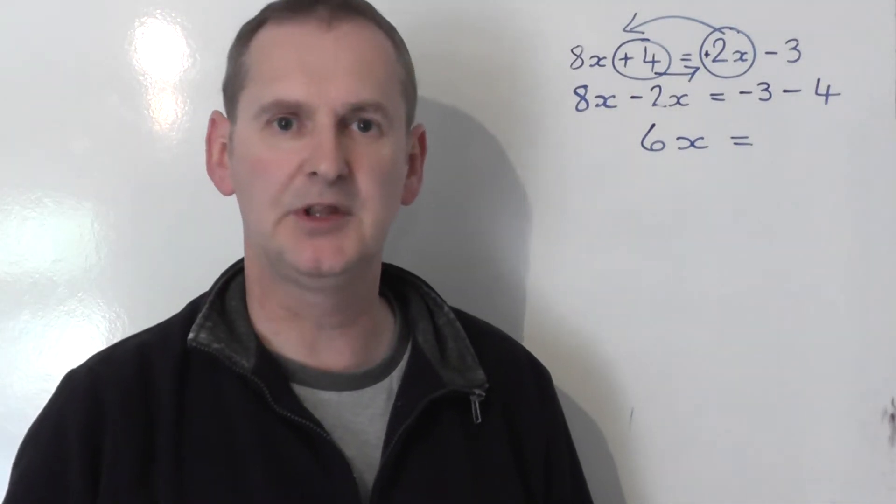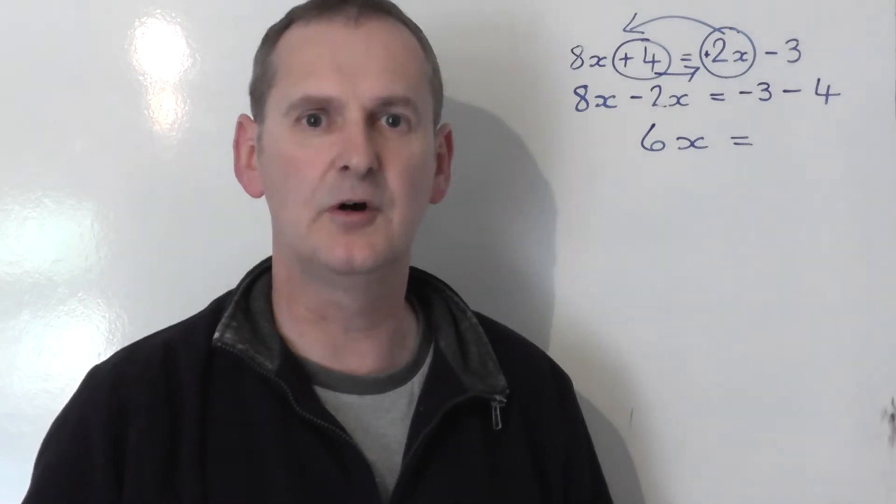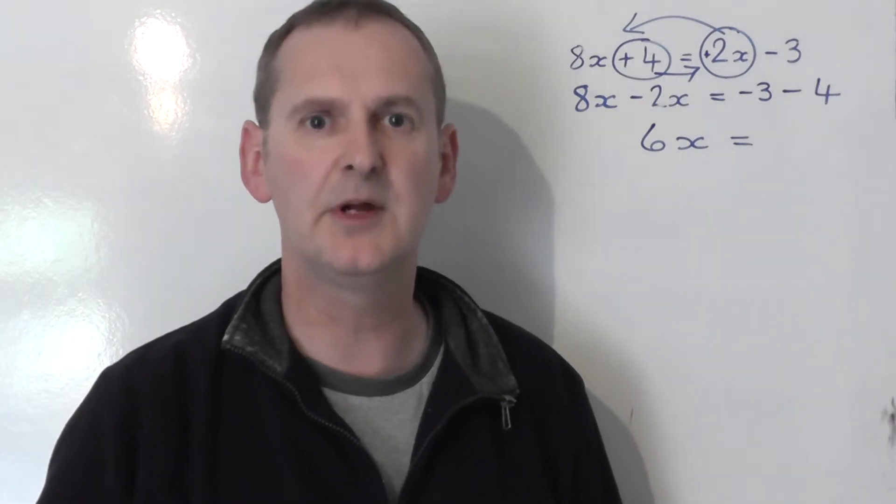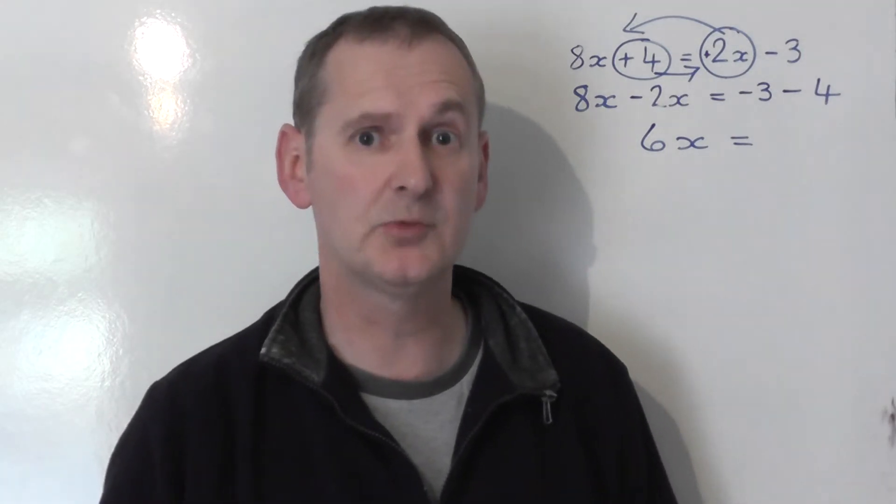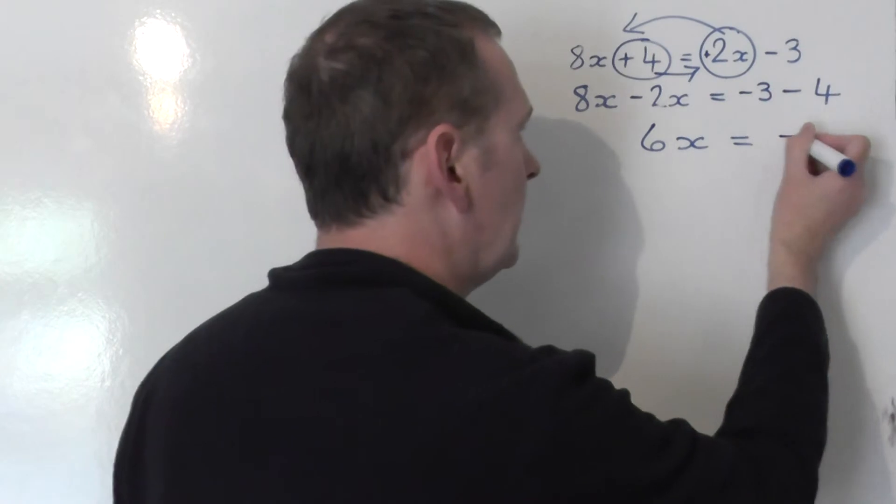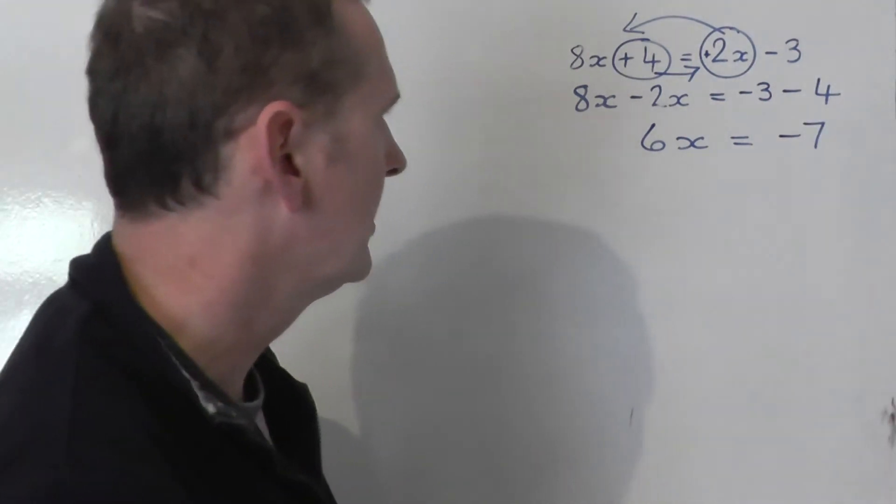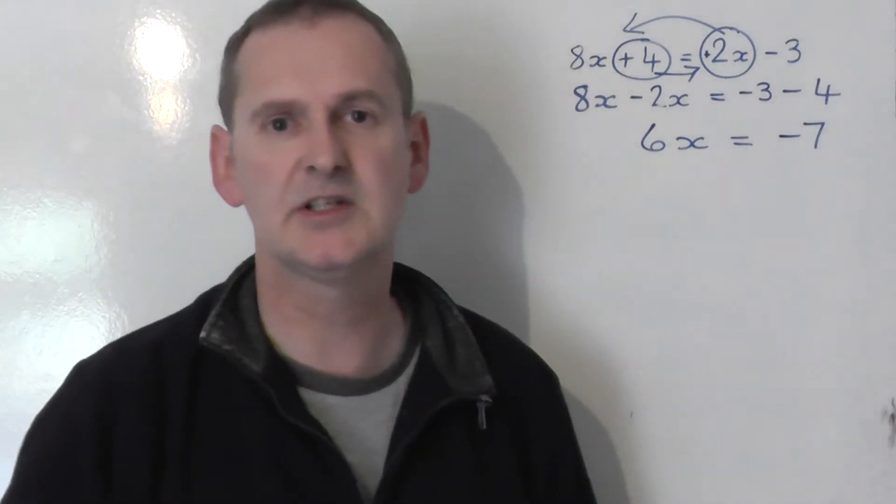Just be careful with this. Minus 3, take away 4, either use a number line or use the army method. Minus army 3 meets minus army 4. They don't fight, they join forces with each other to give a big minus army of 7 soldiers. So you get minus 7 on the right-hand side.